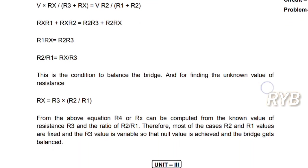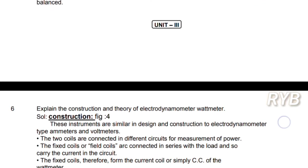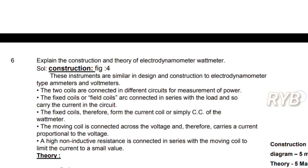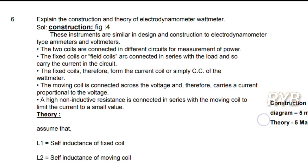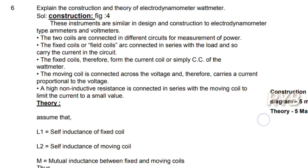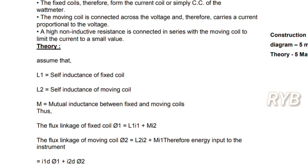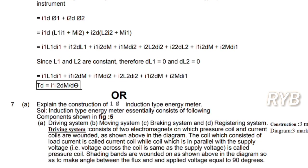Coming to Unit 3: explain the construction and theory of an electrodynamometer wattmeter. The electrodynamometer wattmeter consists of two fixed coils and two moving coils. This instrument is similar in design and construction to electrodynamometer type ammeters and voltmeters. The two coils are connected in different circuits for measurement of power. The diagram and derivation for the deflecting torque of the electrodynamometer type instrument will be explained.